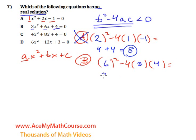6 squared is 36. 4 times 3, 12. Times 4, 48. 36 minus 48, negative 12.